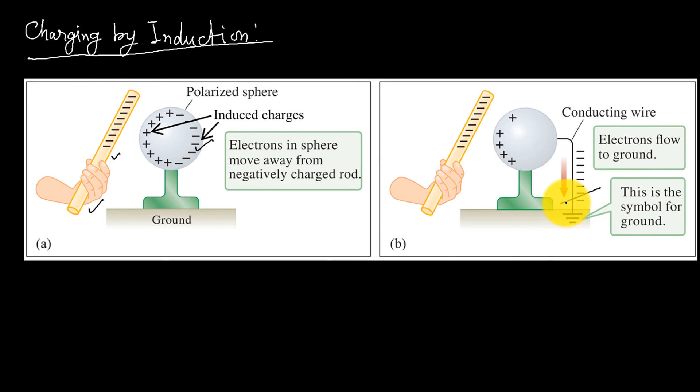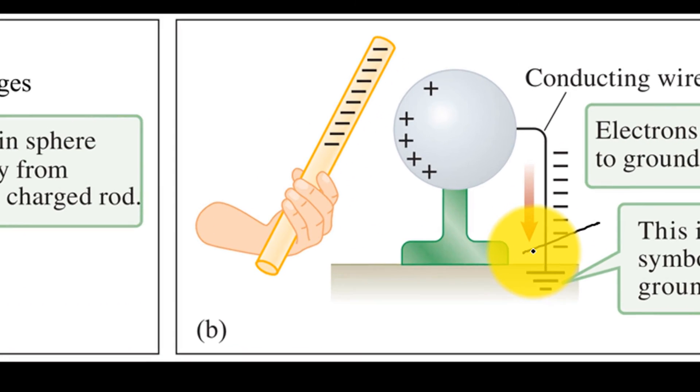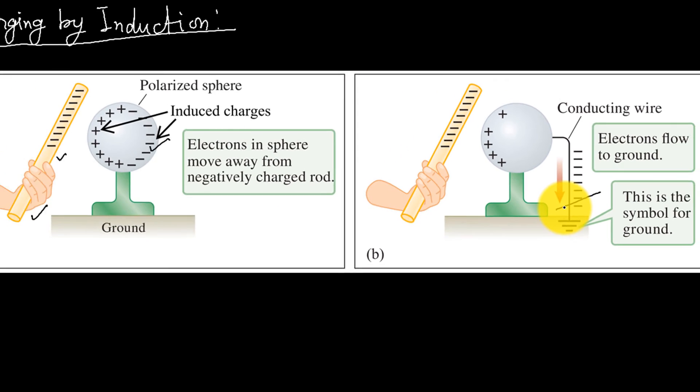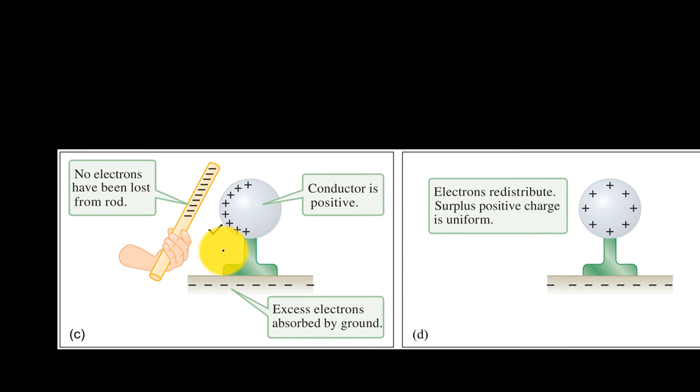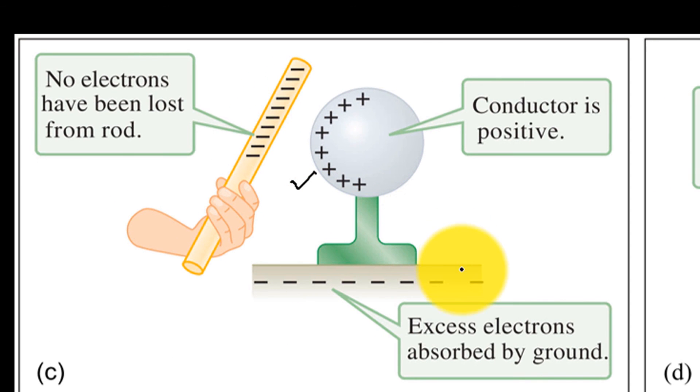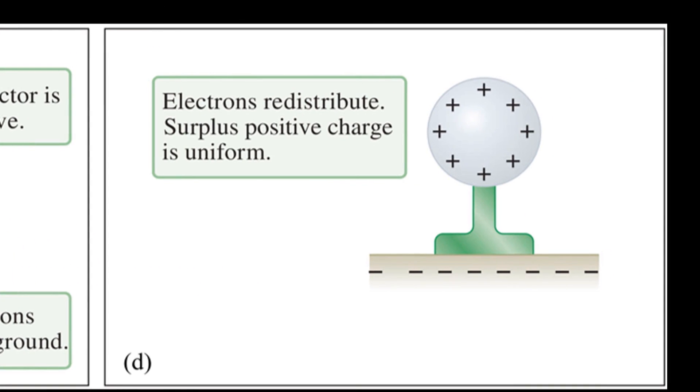In this case, no electrons are lost from the rod. It has the same charge throughout the process. In fact, you could reuse the rod to charge another conductor by same method without recharging the rod again. This process is known as induction. In this process, the charged rod never touches the sphere. The charge that is induced on the sphere has the opposite sign as the charged rod.